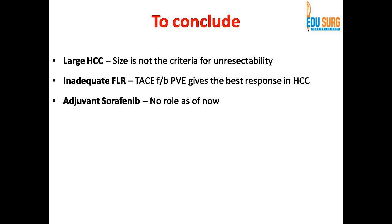To conclude: a rupture and a large HCC is not a criterion for unresectability and poor prognosis. If you have an inadequate future liver remnant due to the size of HCC, a TACE followed by portal vein embolization combined approach gives the best response for total liver remnant hypertrophy. Adjuvant sorafenib as of now has no role; however, we do use sorafenib even at a reduced dose based on the GDN data, and even at 200 mg twice a day or once a day, these patients do well at long-term follow-up. Thank you.